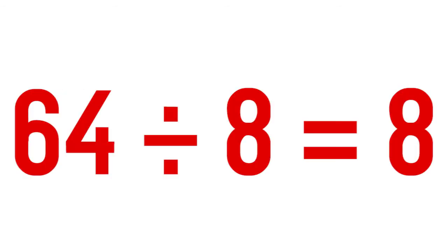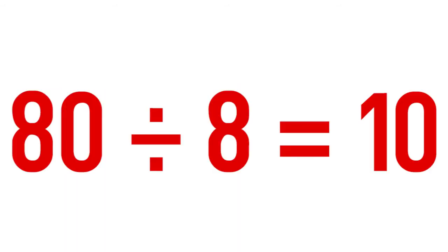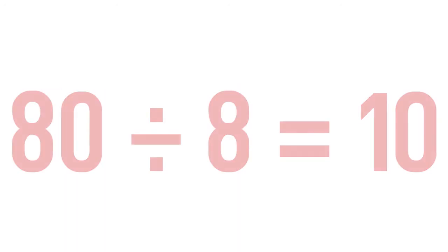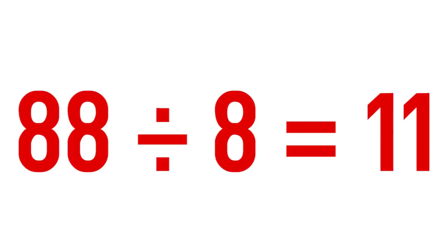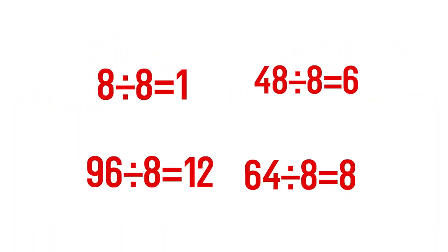64 divided by 8 equals 8. 72 divided by 8 equals 9. 80 divided by 8 equals 10. 88 divided by 8 equals 11. 96 divided by 8 equals 12. And that's how we divide by 8.